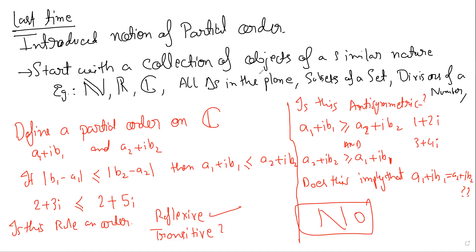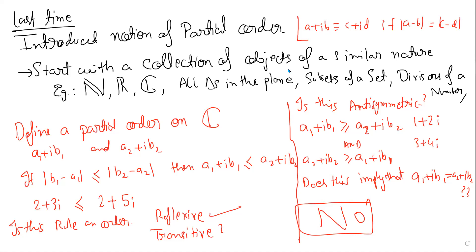To make it an order, you have to say that two complex numbers are equal if the difference of their real and imaginary parts modulus is the same. You have to introduce a new kind of equality. If you change the whole game, you declare this equals this if a minus b equals c minus d. This is geometrically significant but we will see it later.